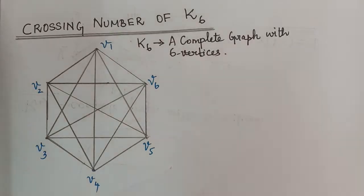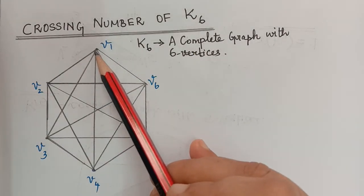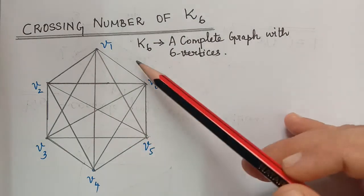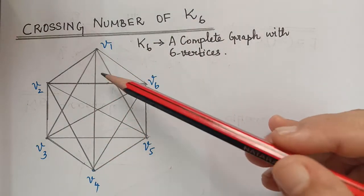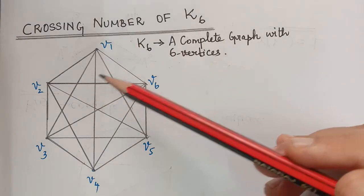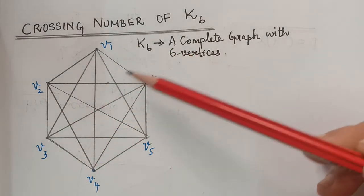K6 is a complete graph with six vertices. A complete graph is a graph in which all the vertices are adjacent to one another. So if we take any pair of vertices, we will have an edge between them. This is a complete graph with six vertices.